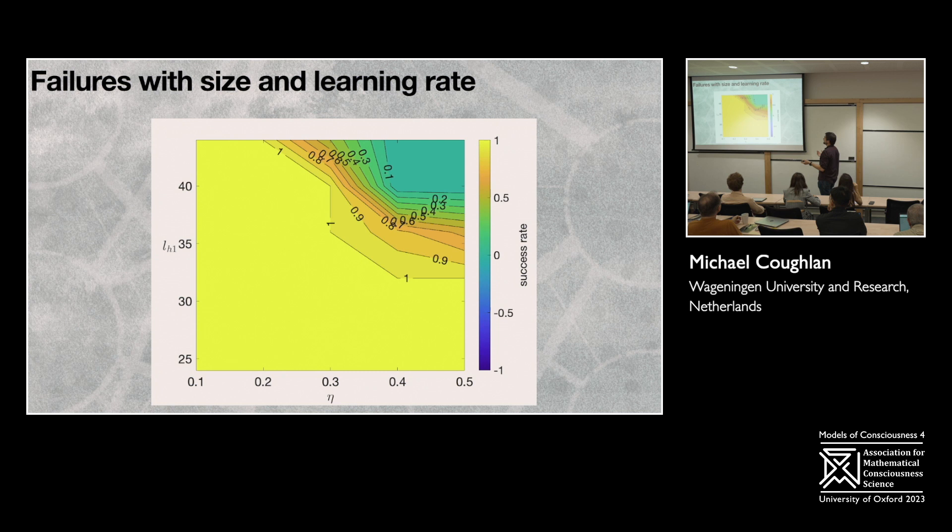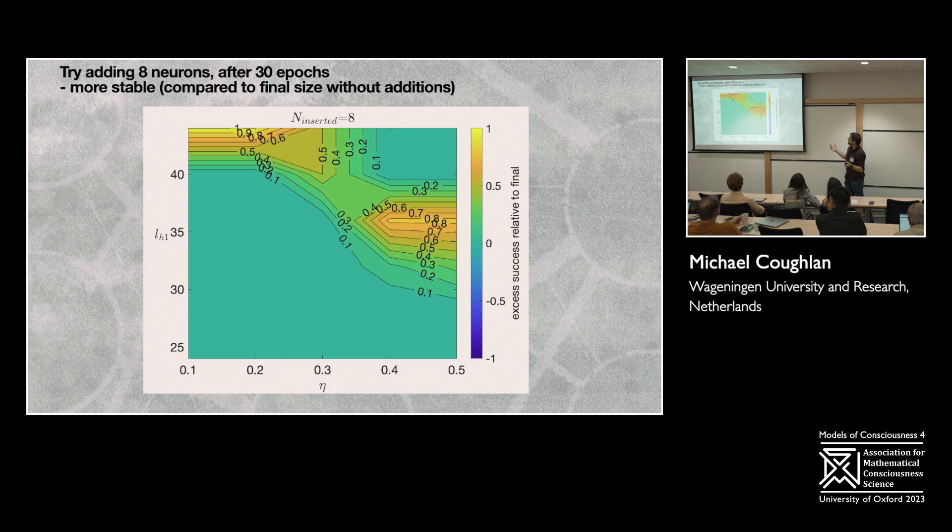So then we compared neurogenesis experiments to this kind of either the final or the base. So compared to starting with a larger network, initially the neurogenesis case is more successful. And we see a Pareto front across larger networks with slower learning rates, down towards even smaller networks with large learning rates, basically indicating that we can tolerate a higher learning rate for a larger network if we just build it up slowly in this very simple case.